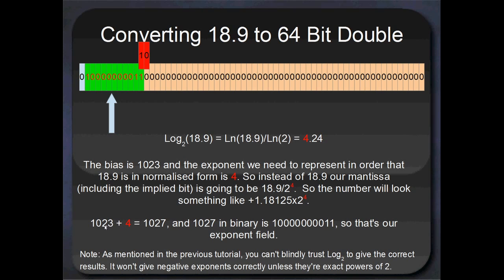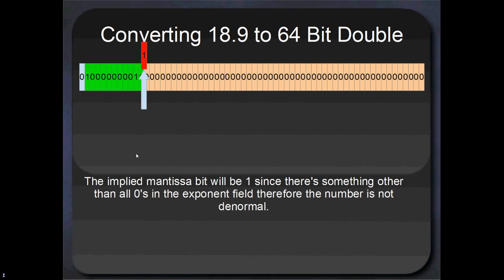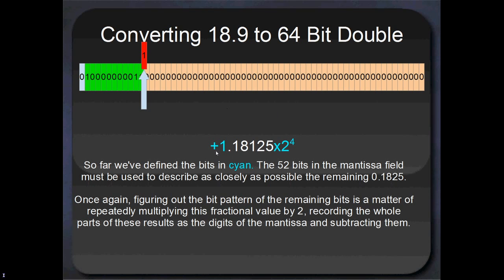Which means that our exponent field has to represent the value 4. And like we said before, it's got a bias of 1,023, so 1,023 plus 4 gives us 1,027. And that's the number there, 1,027, that we've got to represent with our 11-bit exponent field. So that's the bit pattern just there for 1,027. And that's our exponent field. The implied mantissa bit is really easy, it's going to be a 1. This number is nowhere near denormal, it's absolutely massive compared to a denormal number. The other way that we can tell that the implied mantissa bit is a 1 is just the fact that the exponent field has something other than 0 in it.